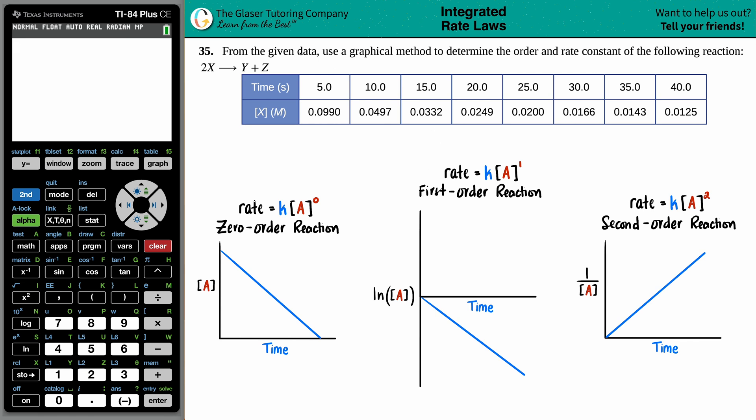Number 35. From the given data, use a graphical method to determine the order and the rate constant of the following reaction. We have 2x yields x plus z. So we have this lovely data chart which we have to use somehow to determine the order of the reaction and the rate constant.